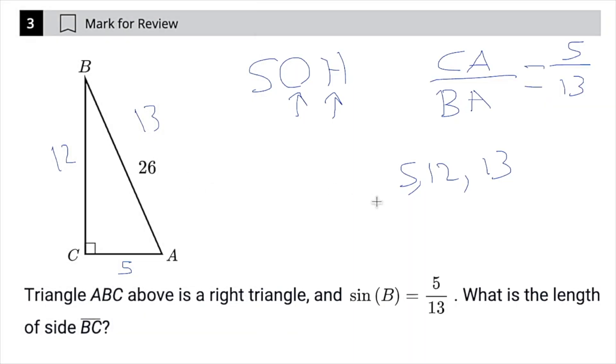The whole thing is getting multiplied by 2. So if this is 26, then this would actually be 24. This would actually be 10. So bc is going to be 24.